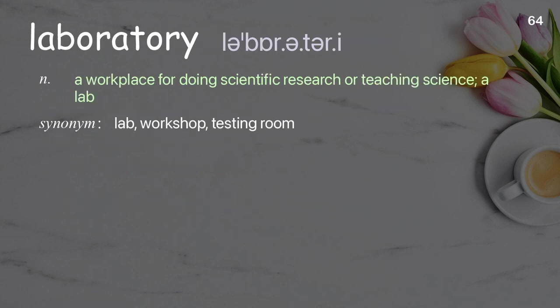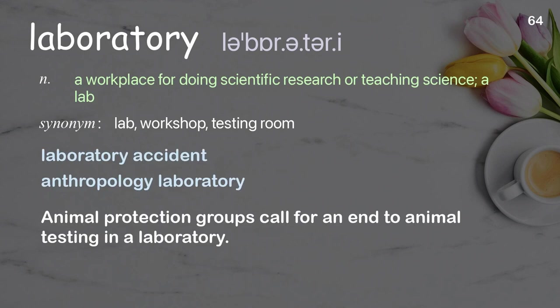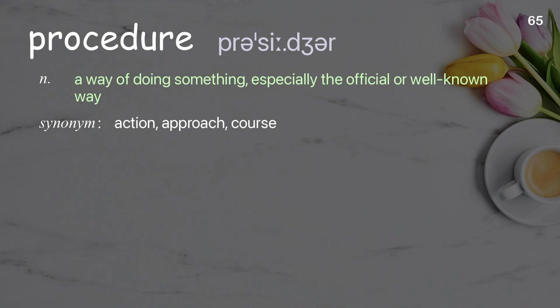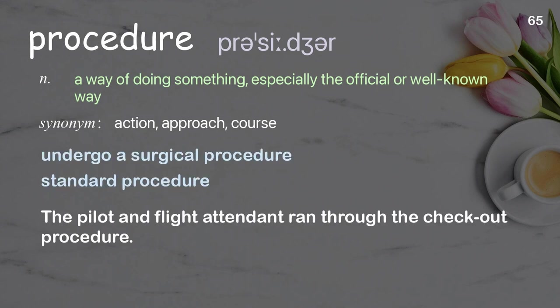Laboratory: a workplace for doing scientific research or teaching science; a lab. Examples: laboratory accident, anthropology laboratory. Animal protection groups call for an end to animal testing in a laboratory. Procedure: a way of doing something, especially the official or well-known way. Examples: undergo a surgical procedure, standard procedure. The pilot and flight attendant ran through the checkout procedure.